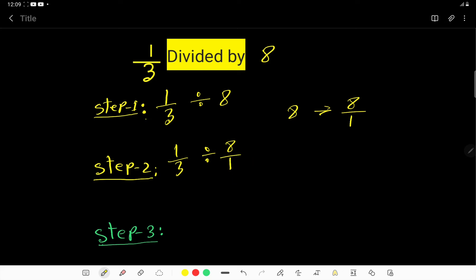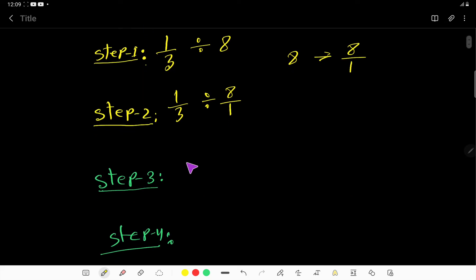So 8 over 1. Now in the third step, I will change this division sign to multiplication sign, and I will take reciprocal of this second fraction, that is 1 over 8. Reciprocal fraction means you have to change the position of numerator and denominator.